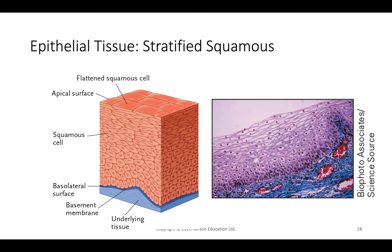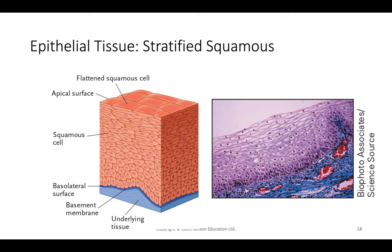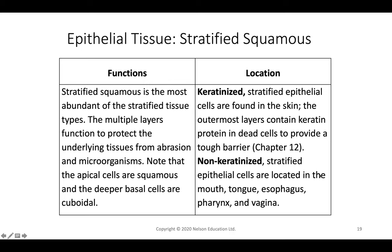Stratified squamous cells are the most abundant type of stratified tissue. Their main purpose is to protect underlying tissues from abrasion and from invasion by microorganisms. To infect the blood supply, microorganisms must penetrate many layers. The apical cells are squamous and the deeper basal cells are cuboidal, making this classifiable as transitional as well.